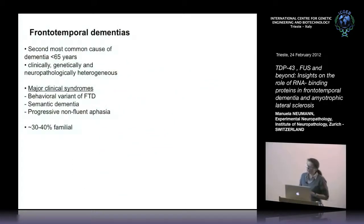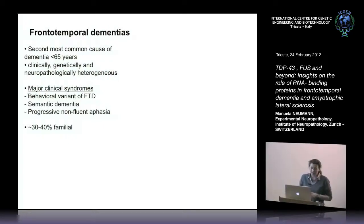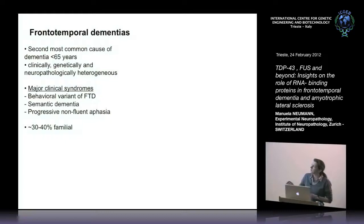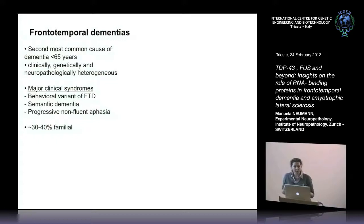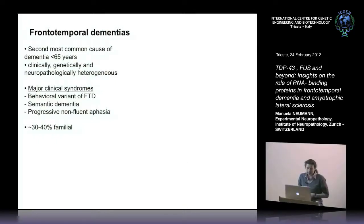As a brief introduction, the disease I'm interested in is frontotemporal dementia. It's the second most common cause in the presenile group of patients, defined as under 65 years of age. It's a clinically, genetically, and neuropathologically heterogeneous group. The clinical symptoms are characterized by predominant atrophy of the frontal and temporal lobes, resulting in behavioral problems or language dysfunctions. There is a strong genetic contribution with about 30 to 40 percent having an autosomal dominant trait of inheritance.